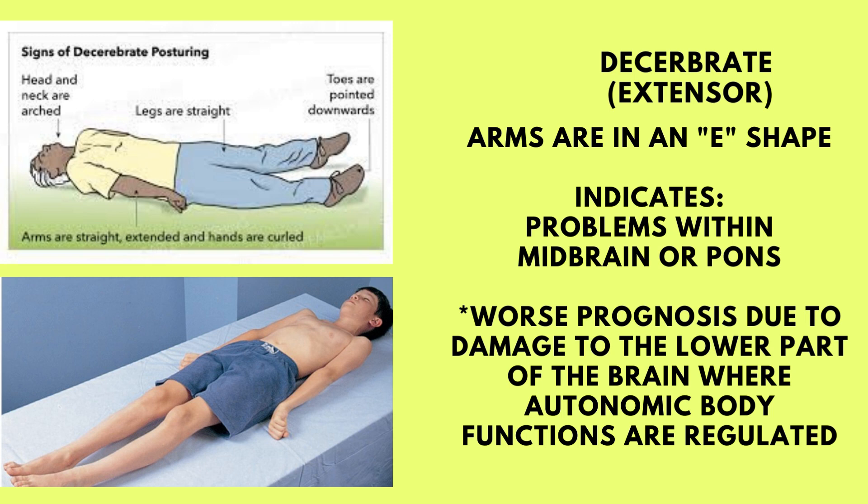On the other hand, decerebrate or extensor posturing is when the arms are in an E shape — think E, extensor. So everything is extending out: the legs are straight, the arms are straight and extended, the head and neck are arched back, and the toes are down. A patient who has decerebrate posturing indicates problems with the midbrain or pons. Unfortunately, decerebrate is a worse prognosis due to the lower portion of the brain being damaged, where our autonomic body functions are located.